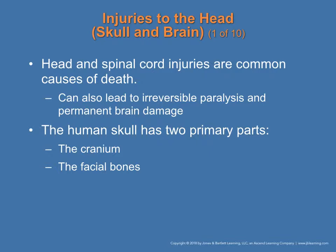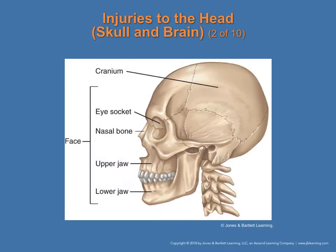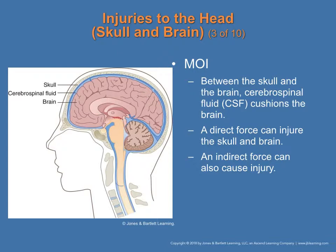Head and spinal cord injuries are a common cause of death and can lead to irreversible paralysis and permanent brain damage. The human skull has two primary parts: the cranium and the facial bones. In adults the skull bones are fused; in children they are not yet fused. The spine consists of vertebrae, with the spinal cord running through the spine. Between the skull and the brain, cerebrospinal fluid (CSF) cushions the brain.